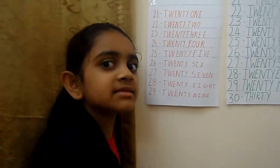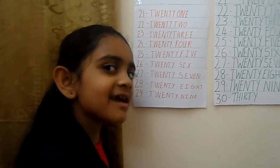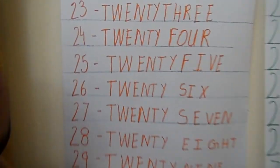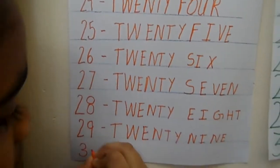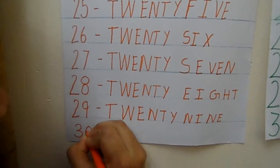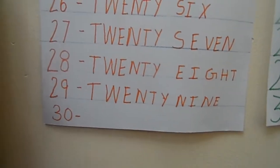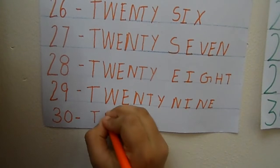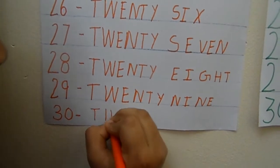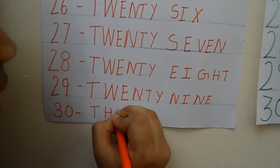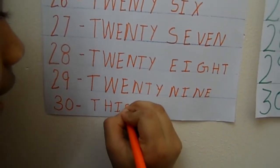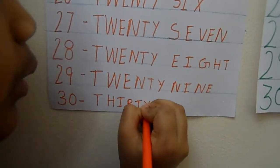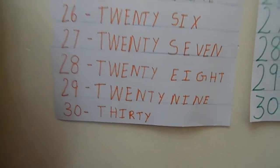Now let's see the next number. 30. So let's see how to write it. 3, then a 0. Now let's write the number name of 30: T, H, I, R, T, Y.